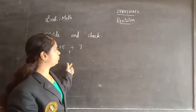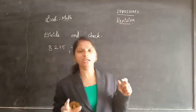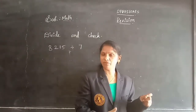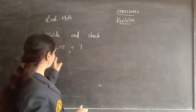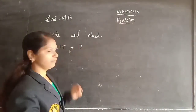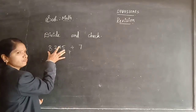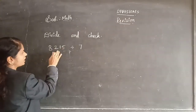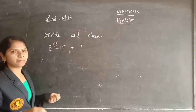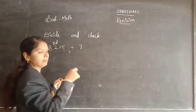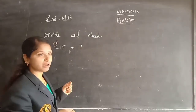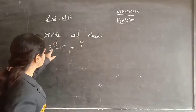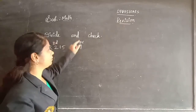Now, divide and check. If the heading says only division, solve only division. If they ask to check also, you follow the checking formula. Let's do the division of 8,215 divided by 7. The dividend is 8,215 and the divisor is 7. Let's write the 7 table: 7×0=0, 7×1=7, 7×2=14, 7×3=21, 7×4=28, 7×5=35, 7×6=42, 7×7=49, 7×8=56, 7×9=63, 7×10=70.